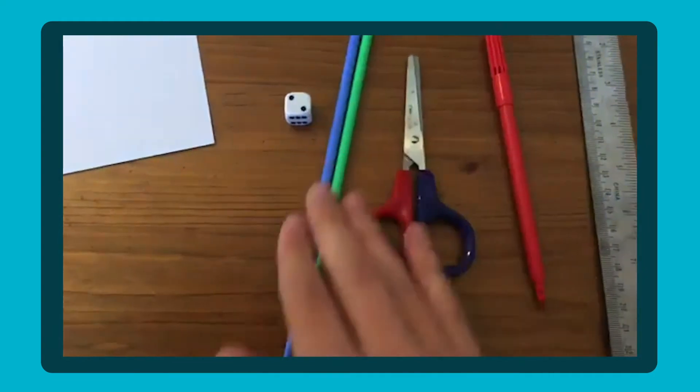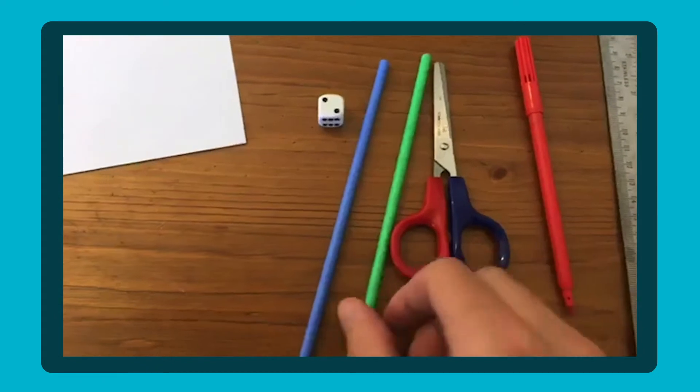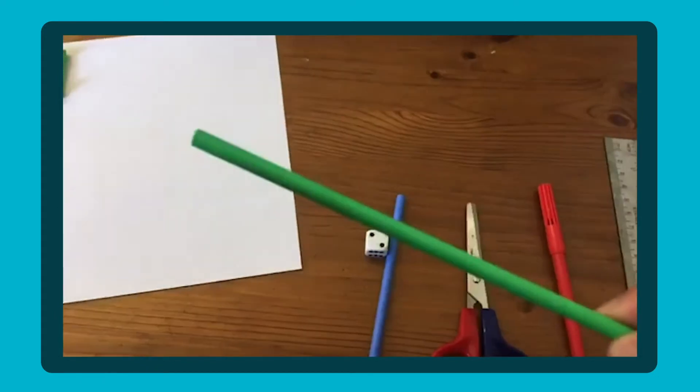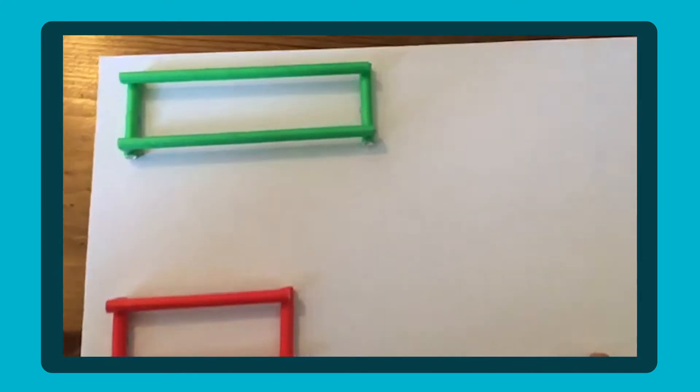What you do is you'll take your straws or your string and you'll measure them out into pairs. So if I have one straw at five centimeters you want another straw at five centimeters. And what you'll do is you'll build a rectangle.